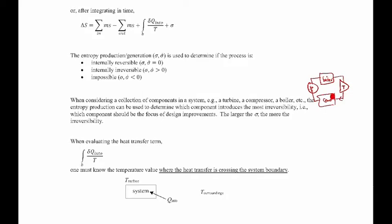For example, if the condenser has the largest irreversibility, as a designer you would focus efforts there to make that device more efficient and improve the thermal efficiency of the whole cycle. We can use the entropy production term to tell us where irreversibilities are being generated and use that information to create better designs — very similar to what was shown in the CFD simulation at the start of the lecture.